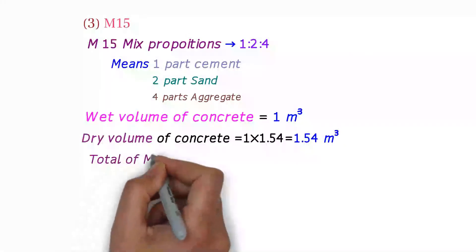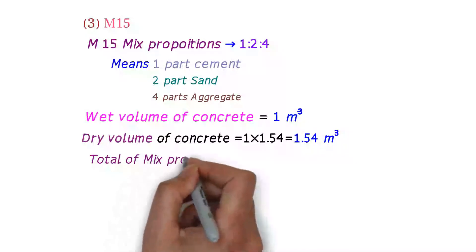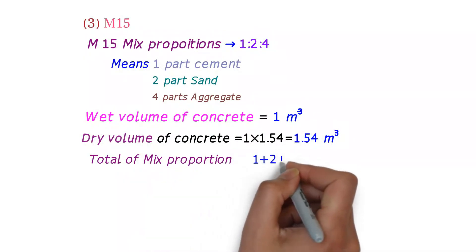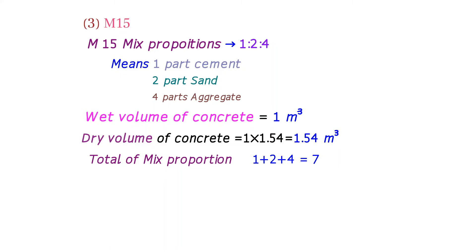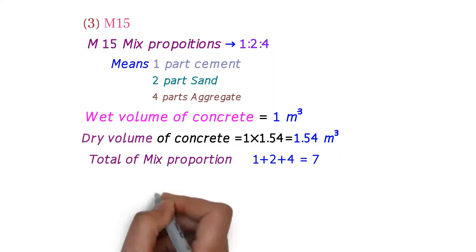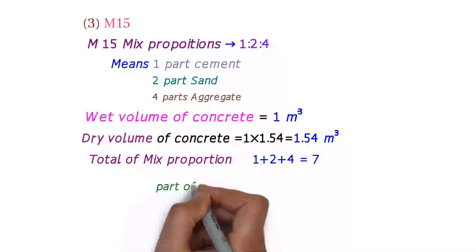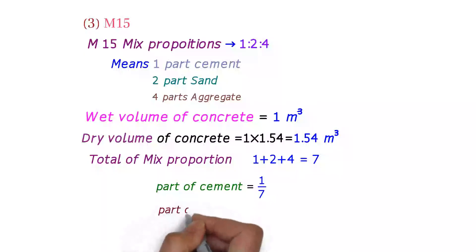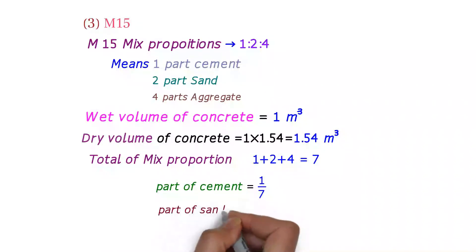The total of mix proportions is 1 + 2 + 4, which equals seven. In this mix, the part of cement is 1/7, the part of sand is 2/7, and the part of aggregate is 4/7.